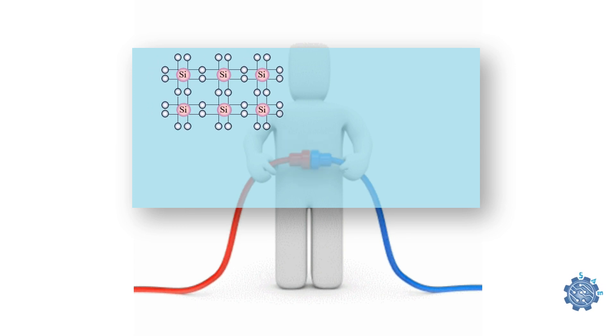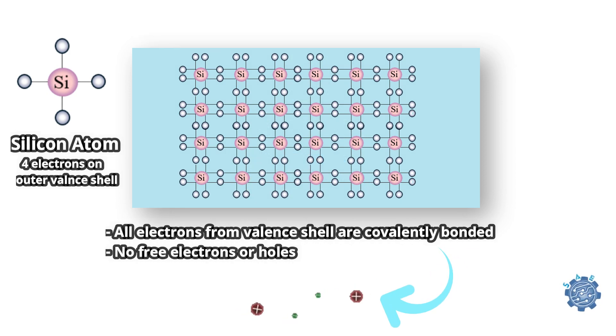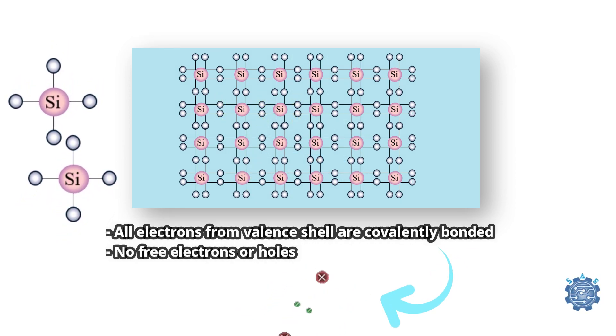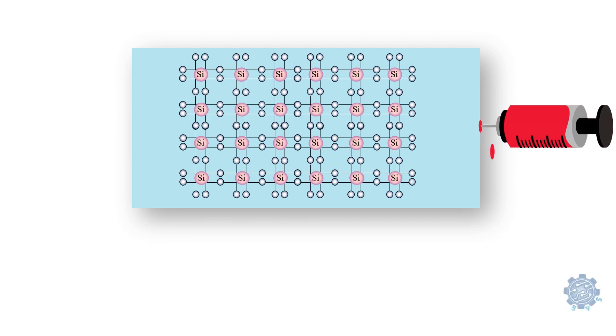On their own, semiconductor materials don't conduct electricity very well because they have no free charges to carry the current. They become useful by controlling their conductivity by doping them, which means adding impurities, free electrons or holes.